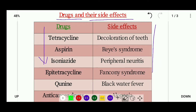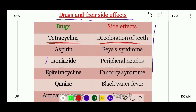The first drug is tetracycline. The side effect of tetracycline is discoloration of teeth. Tetracycline is not preferred for pregnant women because the baby born later will have blackish teeth. So the side effect of tetracycline is discoloration of teeth.